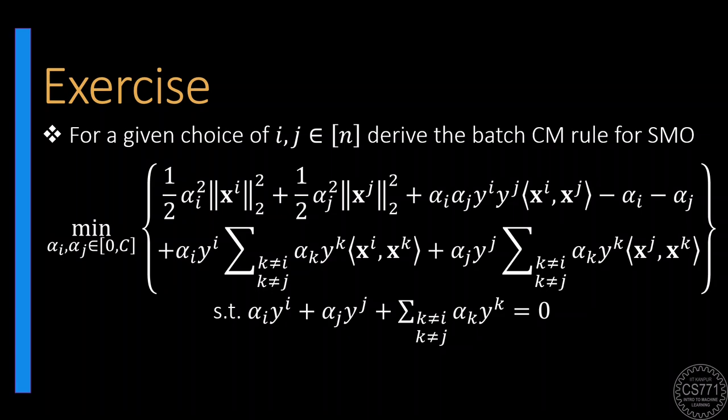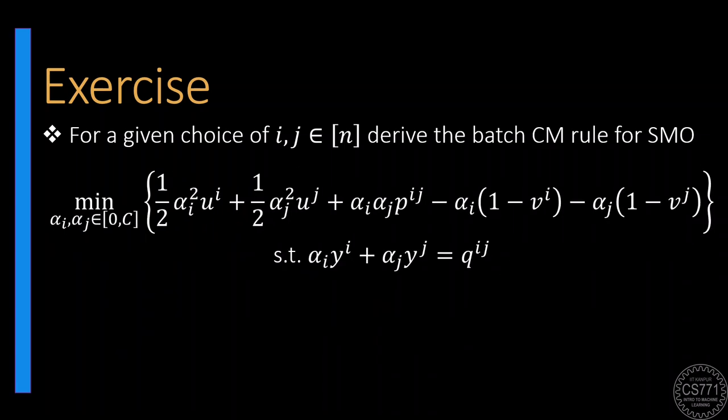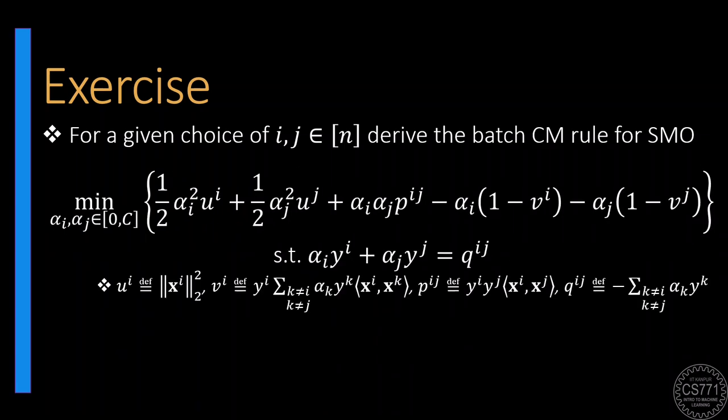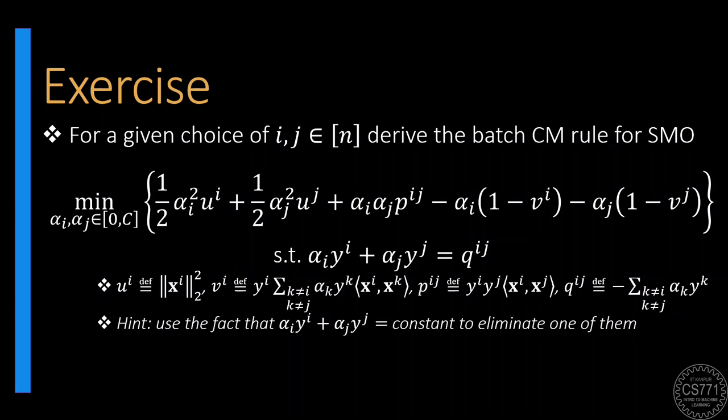These expressions look very messy but can be cleaned up super quickly by introducing some helpful notation. Use variable elimination and the QUIN trick to solve this optimization problem completely with respect to alpha_i and alpha_j.